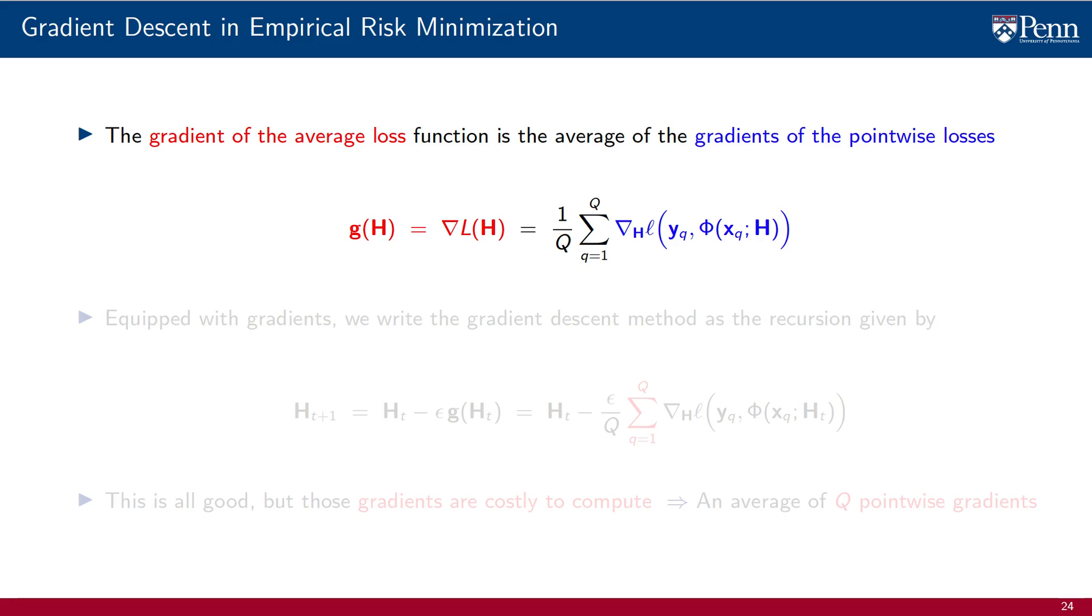Up until now, we have been talking about L without considering its specific form. If we look at the particular form of the empirical cost, we see that the gradient of the average loss is an average of the gradients of the pointwise losses.